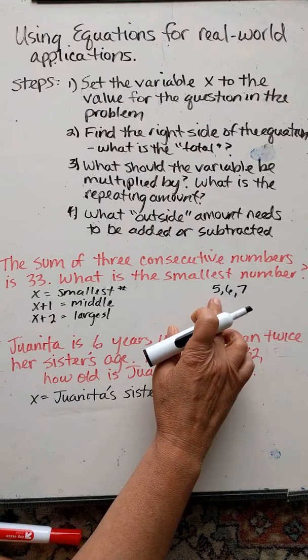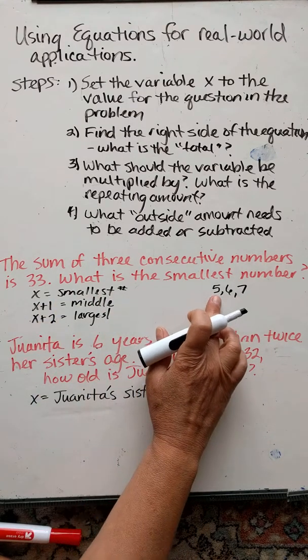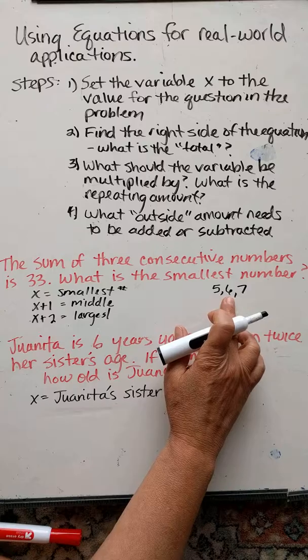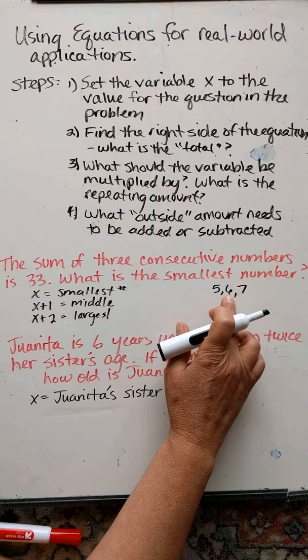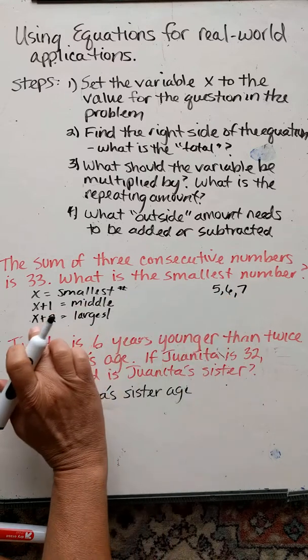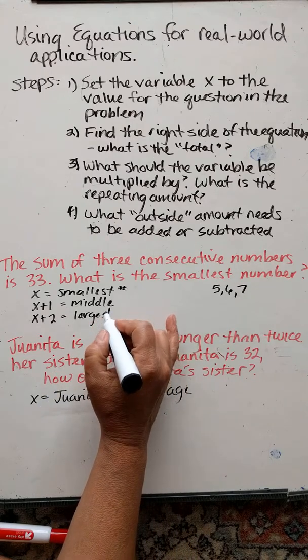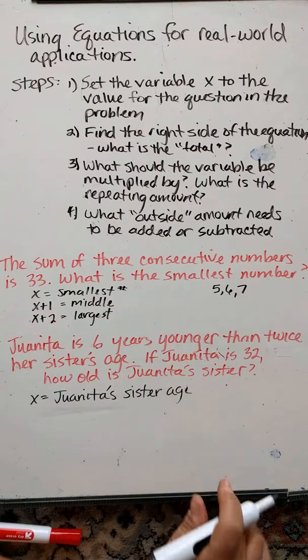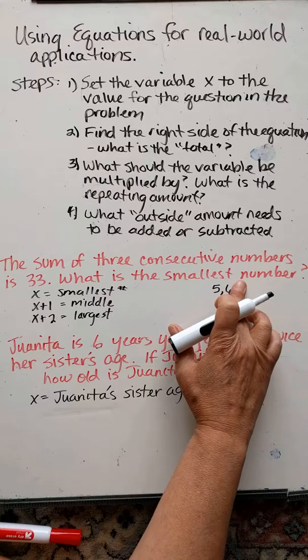So x, 5 is the smallest, 7 is the largest. But if I put in here 5 is x, 5 plus 1 or 6 would be the next one. 5 plus 2 or 7 would be the largest. So that's how we'd represent these three consecutive numbers.